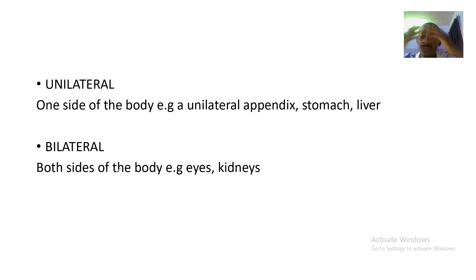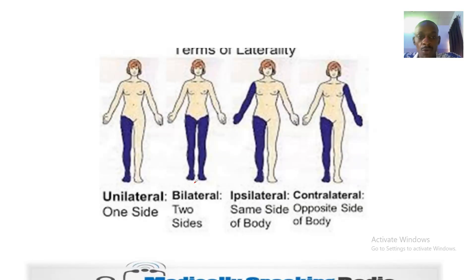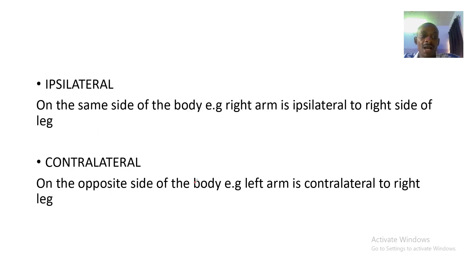The body is divided into half and we have one side and two sides, so both sides means the two sides. Both sides of the body - we have the eyes located on the left and the right, we have the kidneys which are located on the left and the right, so they are bilateral organs.